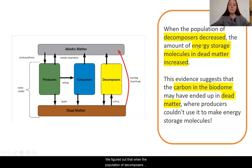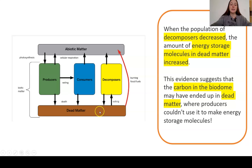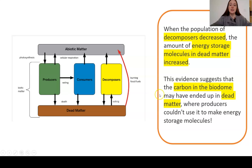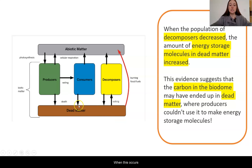We figured out that when the population of decomposers decreased in the biodome, the amount of energy storage molecules in the dead matter increased. It was trapped here because the decomposers were not able to use it and eat it to break it down in cellular respiration. This evidence suggests to us that the carbon in the biodome is in the dead matter. When this occurs, there is less carbon dioxide in abiotic matter for those producers to use to make energy storage molecules.